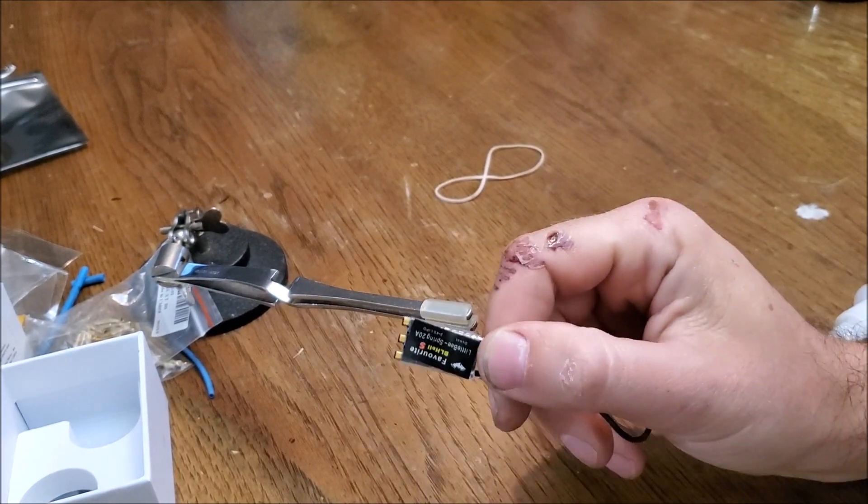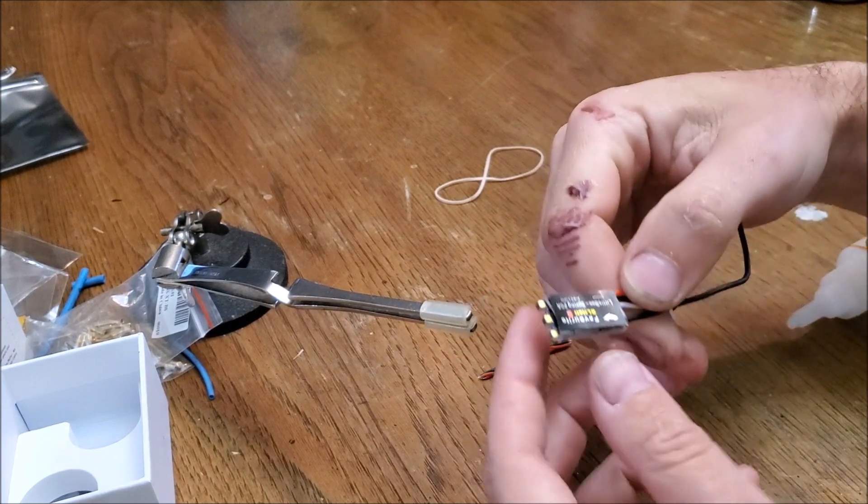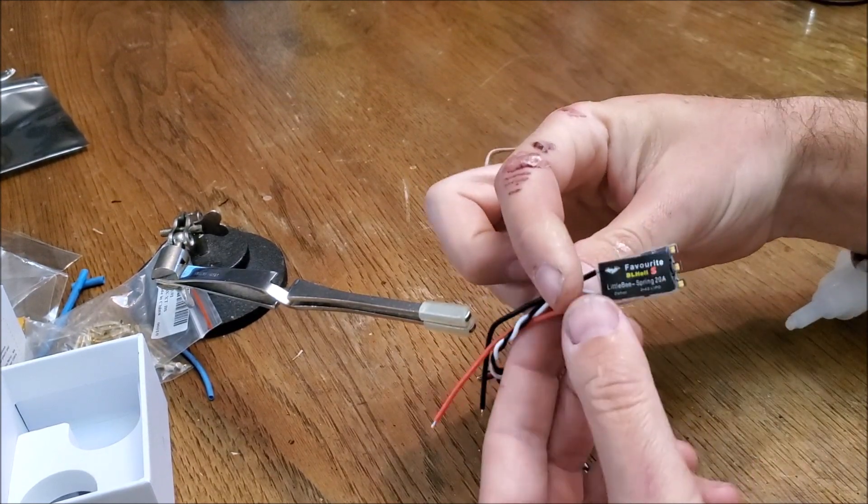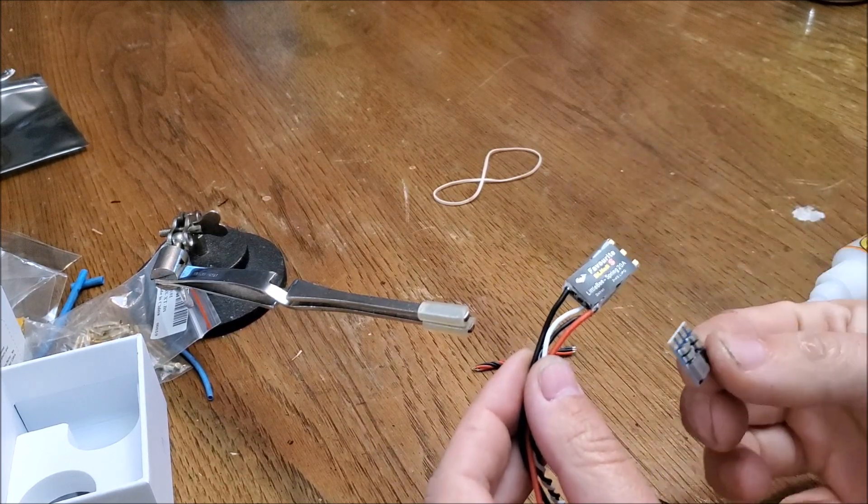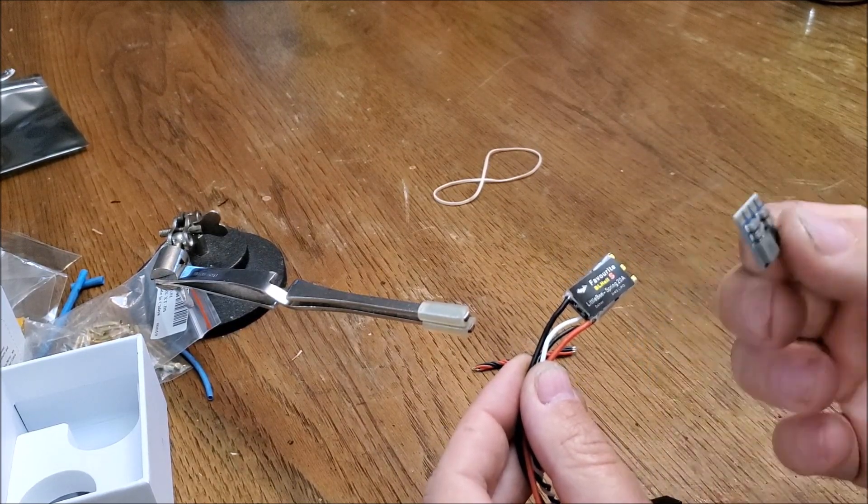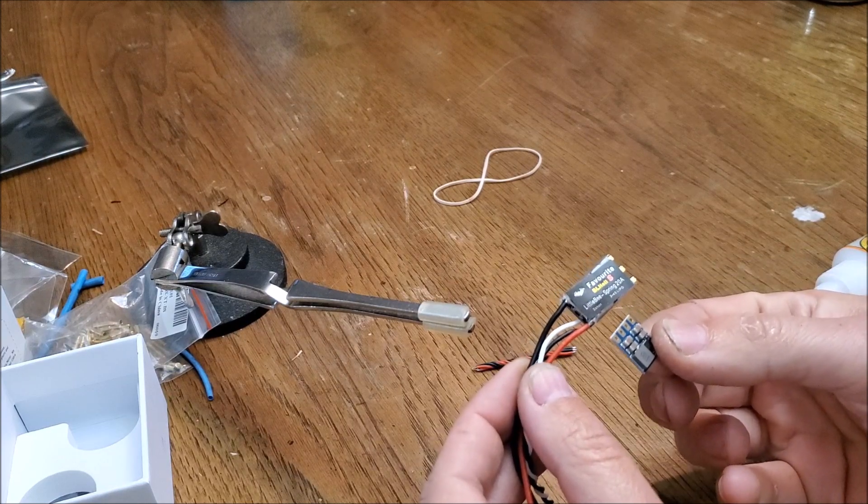Okay, so what we're going to try to do here is explain to you how to take one of these speed controllers that we sell that is non-BEC and install a battery eliminator circuit on it so that you can run the whole thing off of a single flight battery.